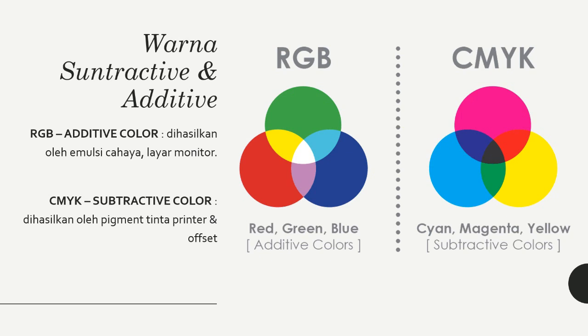Subtractive color atau warna subtraktif terdiri dari CMYK — Cyan, Magenta, Yellow, and Black. Dihasilkan oleh pigment tinta printer dan offset. Titik-titik kecil dari tinta ini apabila menyatu menghasilkan gambar. Semakin banyak warna yang ditambahkan, semakin gelap gambar tersebut. Area dengan paling banyak warna akan menghasilkan warna hitam.